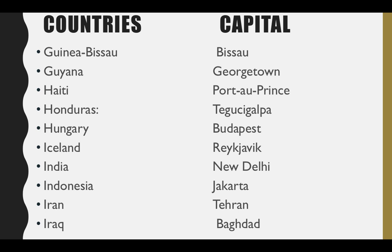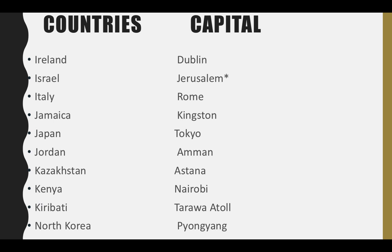Next is Guinea-Bissau. Guyana — its capital is Georgetown. Haiti — its capital is Port-au-Prince. Honduras — its capital is Tegucigalpa. Hungary — its capital is Budapest. Iceland — its capital is Reykjavik. India — its capital is New Delhi. Indonesia — its capital is Jakarta. Iran — its capital is Tehran. Iraq — its capital is Baghdad.